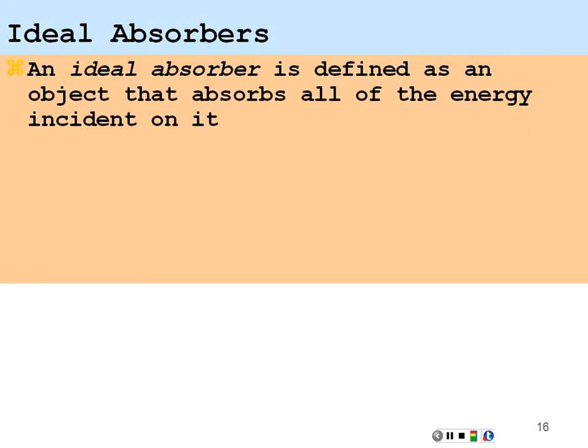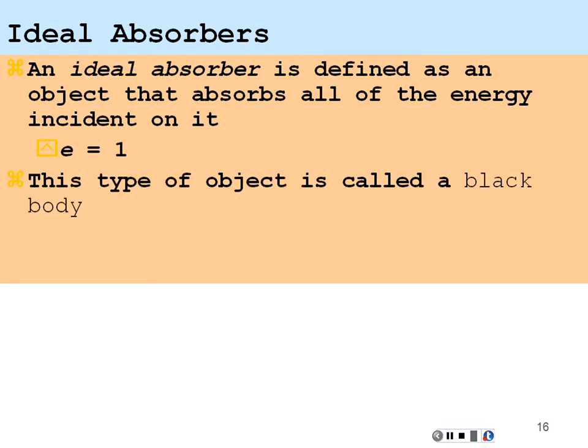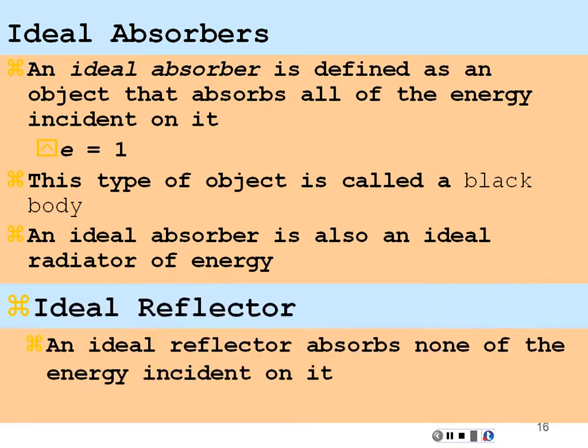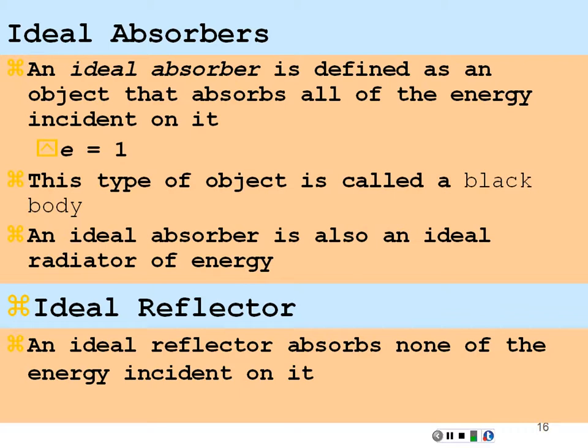An ideal absorber is defined as an object that absorbs all the energy incident on it. Emissivity in this case would be equal to one because emissivity and the absorptivity are the same. This type of object that absorbs everything of the energy on it is called a black body and it's also emitting at the same emissivity as well. An ideal absorber is also an ideal radiator of energy. An ideal reflector absorbs none of the energy on it and has an emissivity of zero. So it's not absorbing anything and it's not emitting anything. It has emissivity of zero for an ideal reflector.